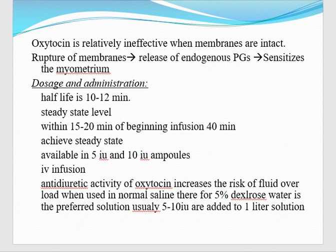Dosage and administration of oxytocin: the half-life of oxytocin is 10 to 12 minutes. Steady state level is achieved within 15 to 20 minutes of beginning infusion — about 40 minutes. The injection is available in 5 international units and 10 international units. We give it in the form of infusions. The antidiuretic effects of oxytocin increase the risk of fluid overload, and that is why we use 5% dextrose water as the preferred solution. Usually 5 to 10 international units are added in one liter of solution.